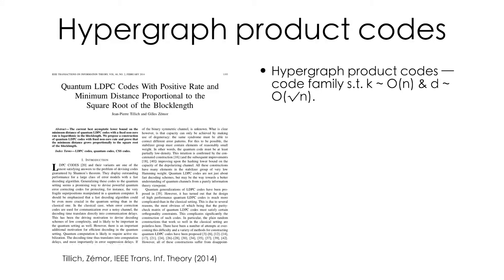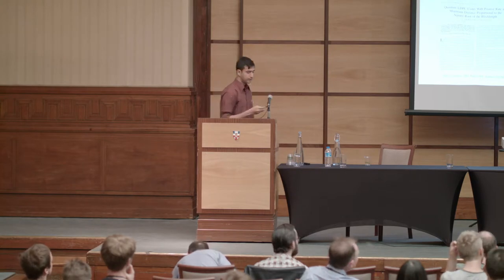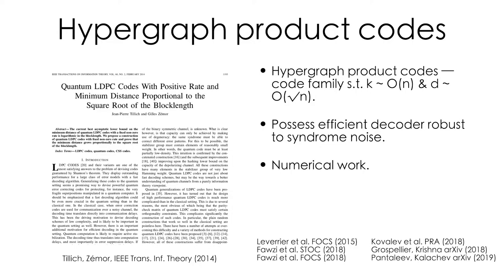Hypergraph product codes are a class of quantum codes discovered by Tillich and Zemor back in 2014. They're capable of encoding a number of qubits that scales linearly in the block size, and at the same time their distance is great — they can correct a number of errors that scales as the square root of the block size. These codes can be equipped with an efficient decoder called the small set flip decoder, which when errors occur randomly can correct a large number of those randomly occurring errors. Furthermore, this decoder is also robust to syndrome noise.